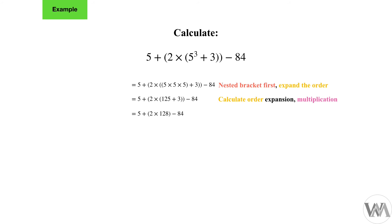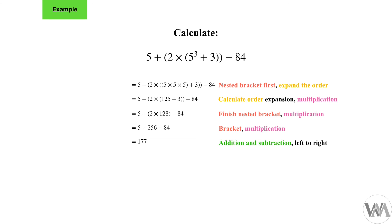Now we have 2 times 128 left in brackets. We multiply 2 times 128 to get 256, completing the last bracket. Finally, we have only addition and subtraction left: 5 plus 256 minus 84 equals 177, done left to right. That is the final answer. If you found this video helpful, please remember to subscribe and check out any other math tutorials. Thanks for watching.